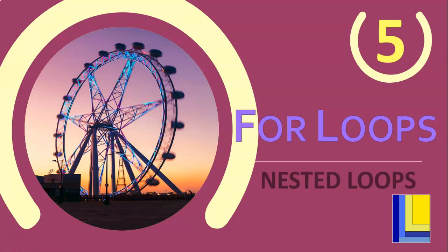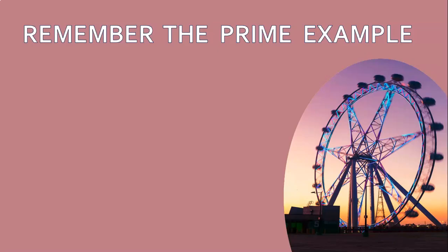This is part 5 of our for loops series and we're going to be looking at nested loops, which are loops inside of loops. Let's go back to an example we did earlier in this series - the prime number example. If you remember that video, we were trying to count the factors of a number. If there were two factors, we knew it was a prime number, so we had a variable counting how many factors there were, initialized to zero.